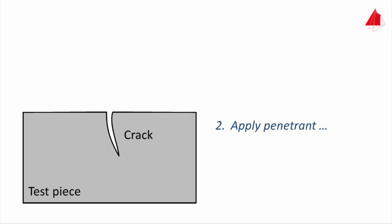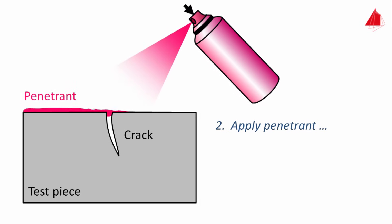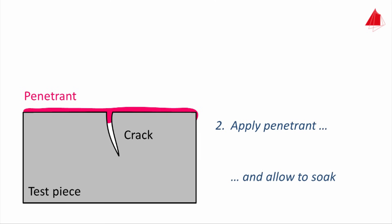In the second step, the penetrant is applied to the test piece, usually red-colored low-viscosity oil. Due to the penetrant's high surface-wetting capability, it penetrates into the defects and cracks.